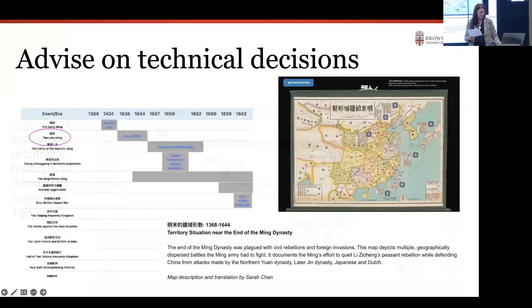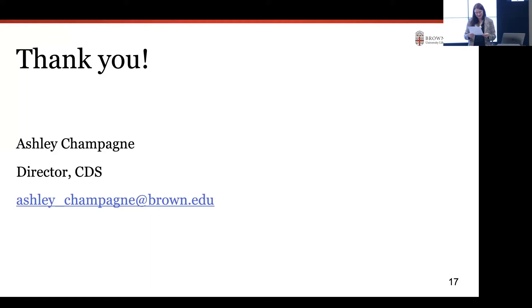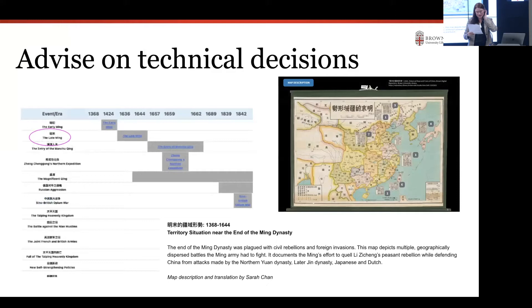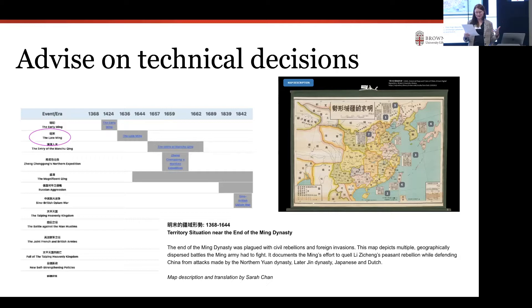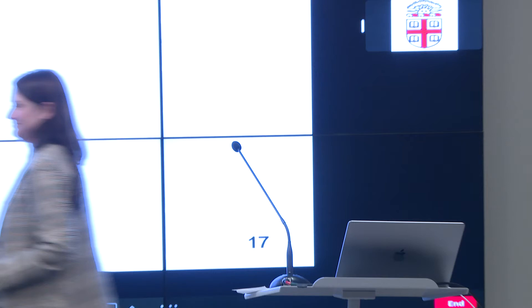One of the things we looked at in deciding on the timeline plugin was: is it current? Does it have a good history? Are developers working on it now? Is it open source? This particular plugin was answering those questions in a way we thought was relevant to the project. We also thought the timeline was useful because it showed the maps together from a bird's-eye view. Our project team was excellent in thinking through all these technical choices, and our center was part of that guiding effort.